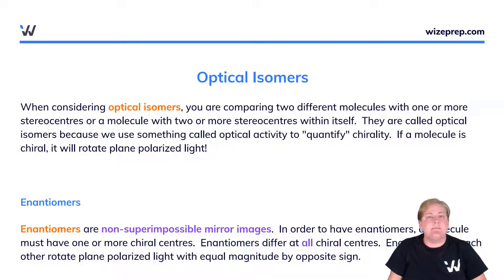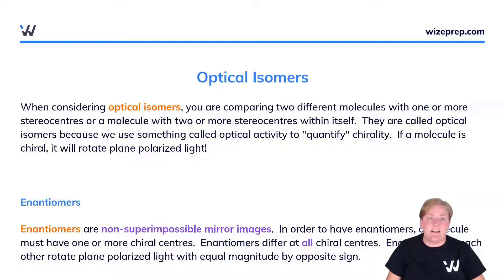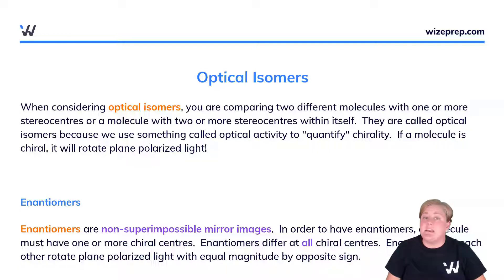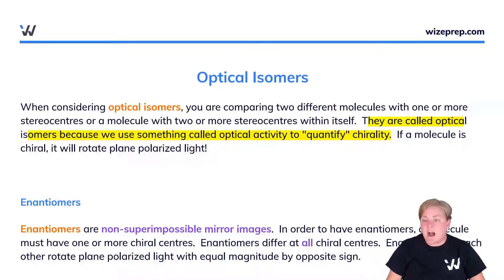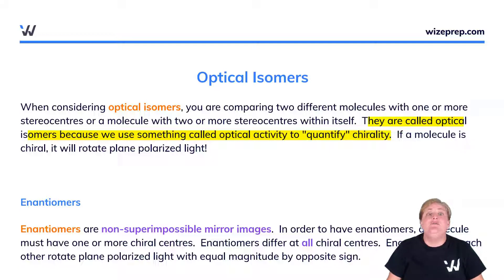How does chirality manifest when comparing two different molecules? For this we need to discuss optical isomers. When considering optical isomers, you are comparing two different molecules with one or more stereocenters, or a molecule with two or more stereocenters within itself. They are called optical isomers because we use optical activity to quantify chirality. Chiral molecules give a reading when measuring optical activity, and achiral molecules do not.